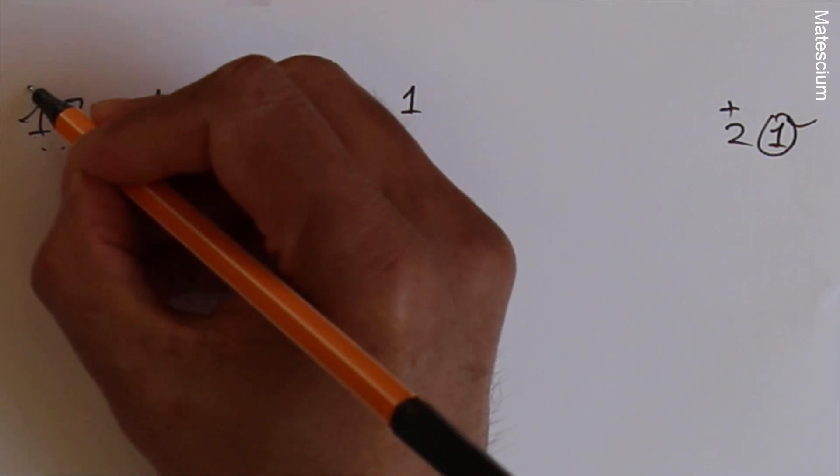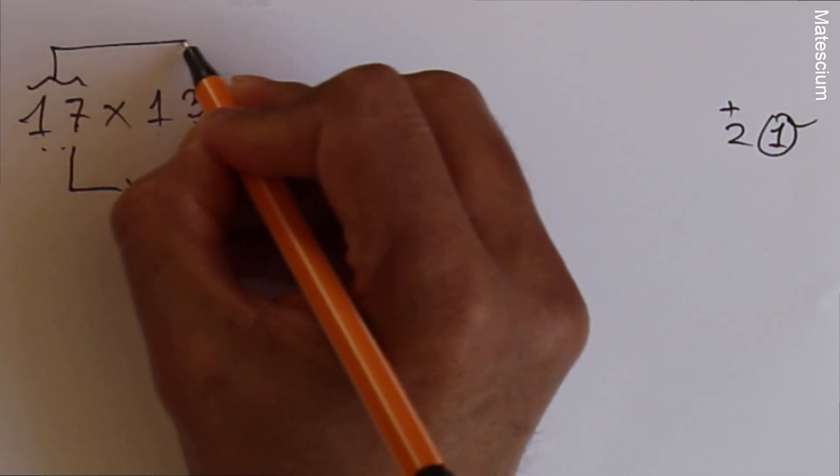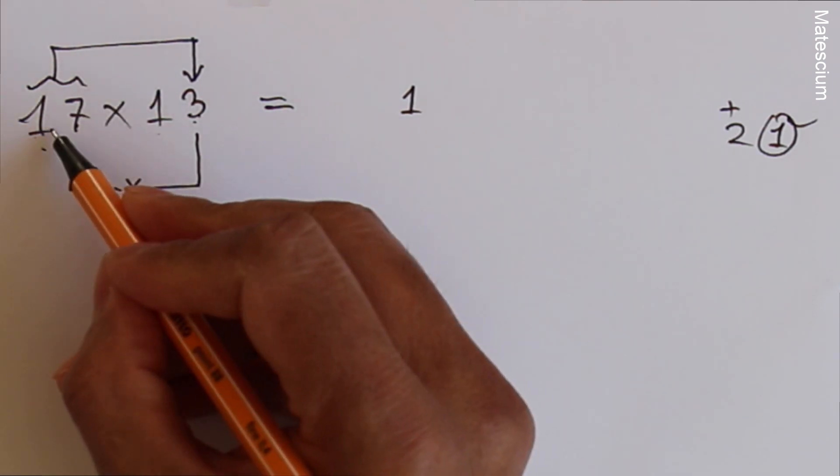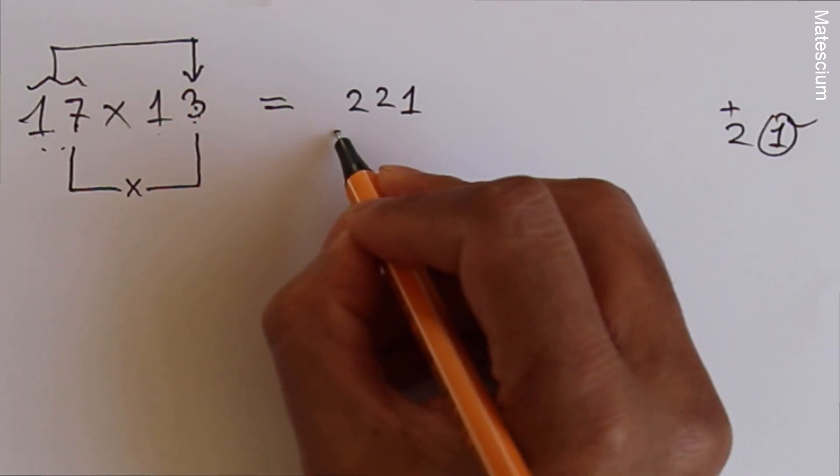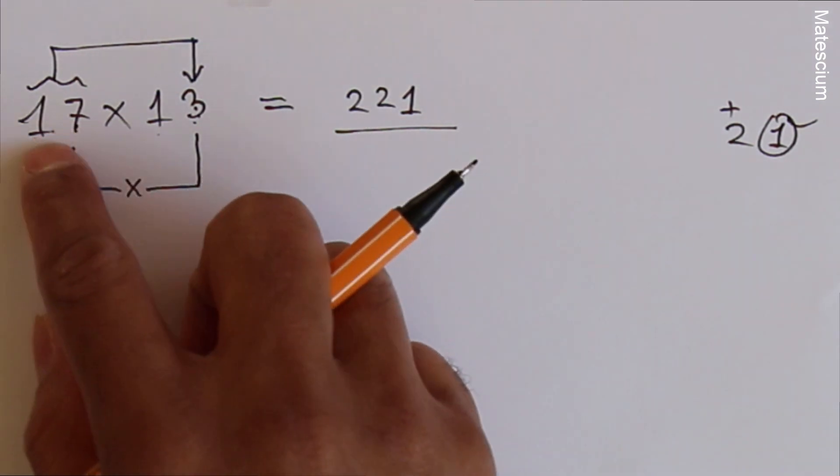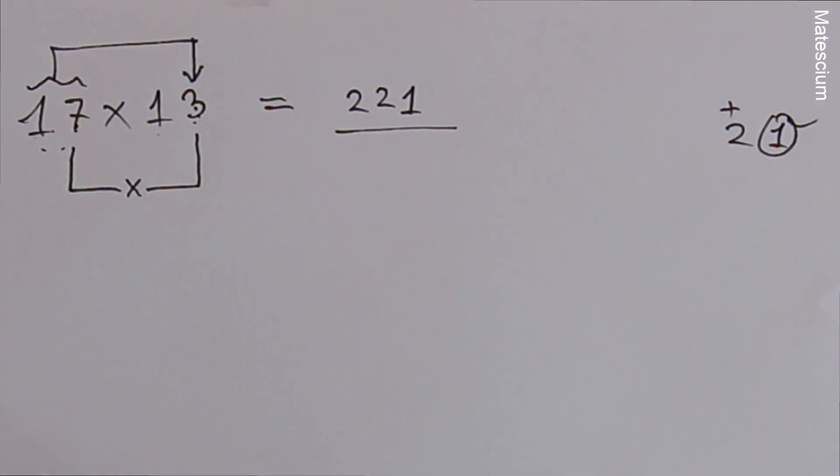Then add 17 with 3. That means 17 plus 3 is 20 plus 2 is 22. 221 is the answer of 17 times 13. Isn't it simple?